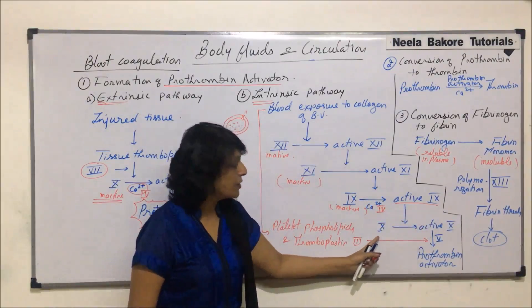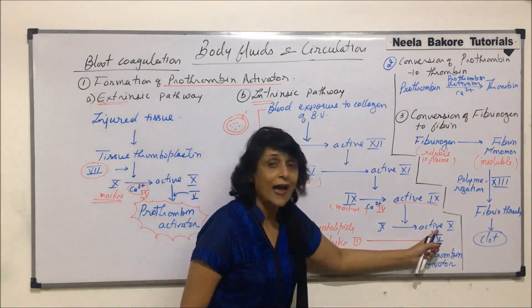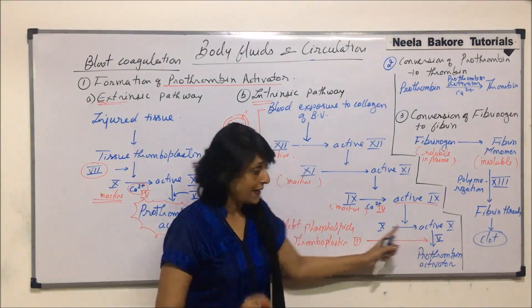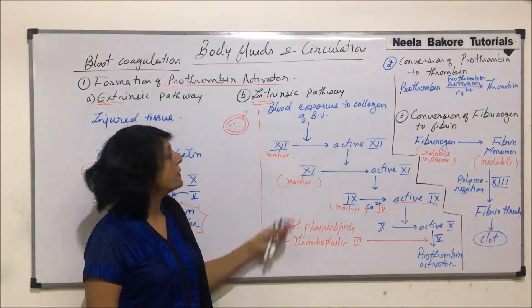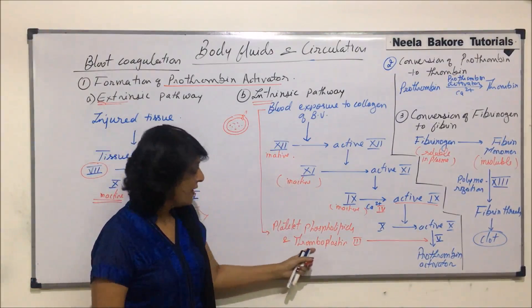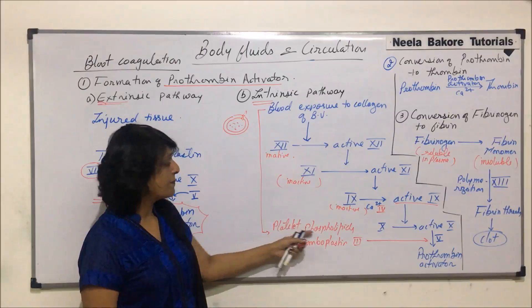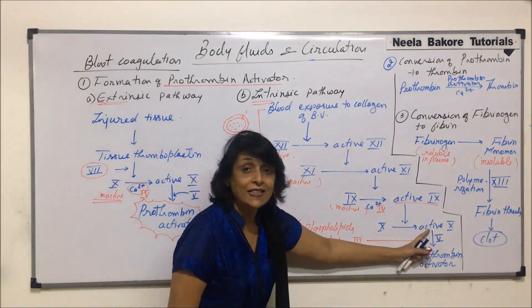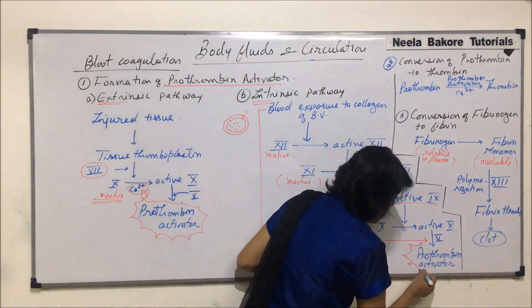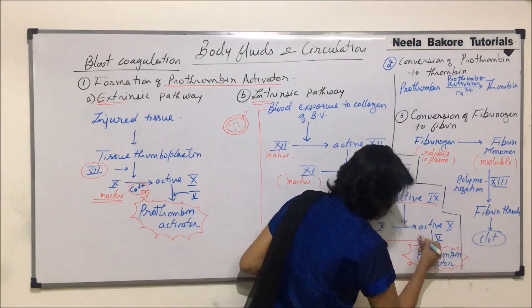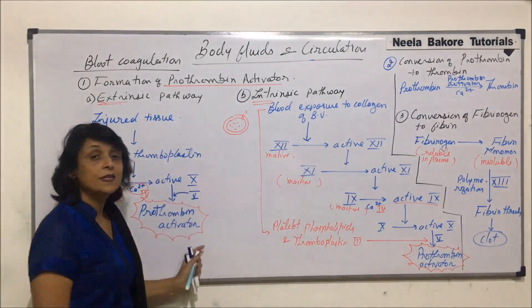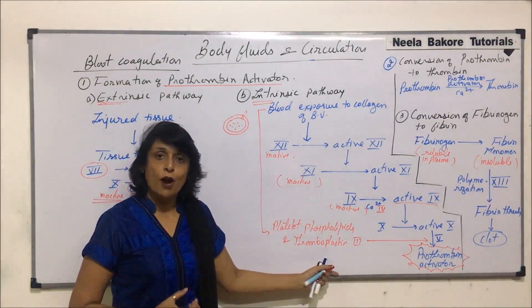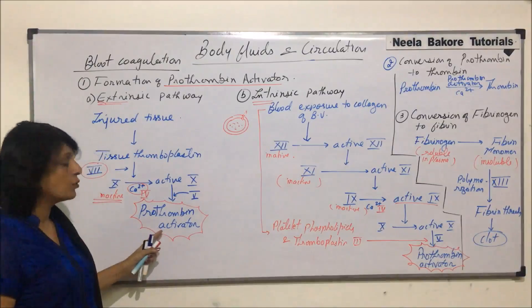Active factor 9 helps in the conversion of inactive factor 10 into active factor 10, which in the presence of factor 5, thromboplastin from the damaged blood vessels, and platelet phospholipids, gets converted into prothrombin activator. So whether we talk of the extrinsic pathway or the intrinsic pathway, the end product we get is prothrombin activator.